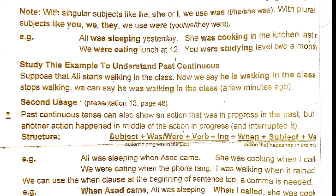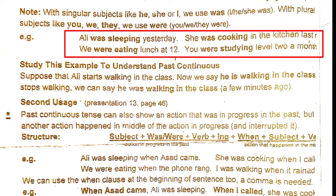Let's look at a few examples. 'Ali was sleeping yesterday.' Ali is the subject, 'was' is the helping verb of the past continuous tense, and 'sleeping' is the verb with -ing, making it a continuous form.